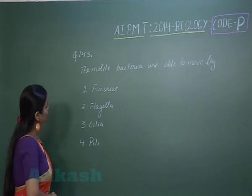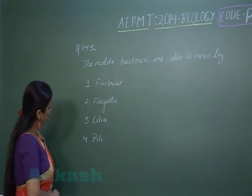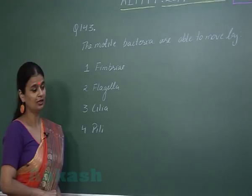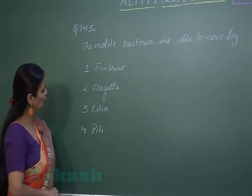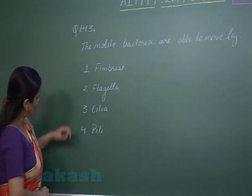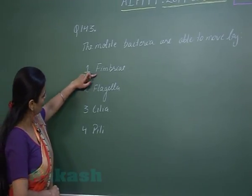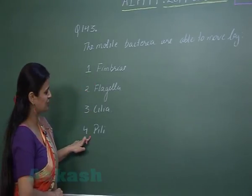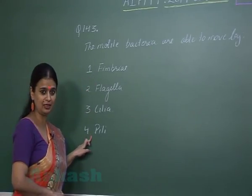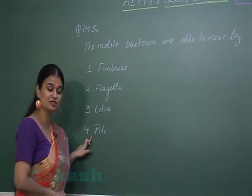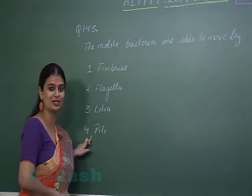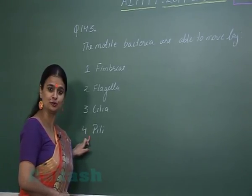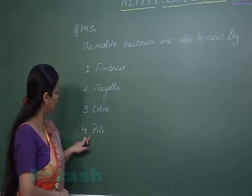Question number 143: Which of the following structures helps in bacteria for locomotion? Looking at the first and fourth options — Fimbriae and Pili — these structures help in the attachment of bacteria and have nothing to do with locomotion.